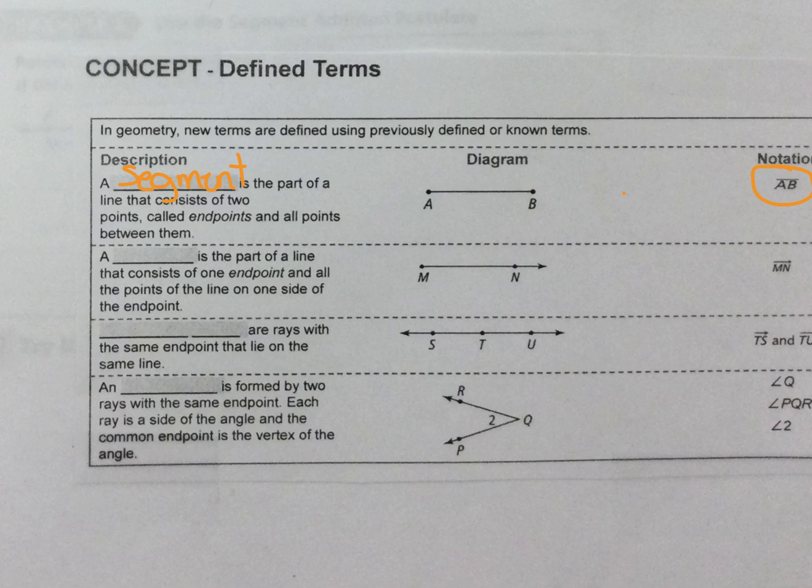A ray is a part of the line that consists of one endpoint, right here, and all the points of a line on one side of the endpoints. It goes forever and ever in one direction and that's how we make the notation.